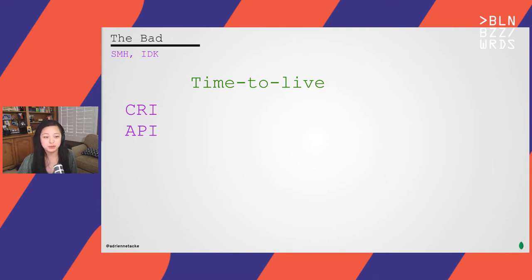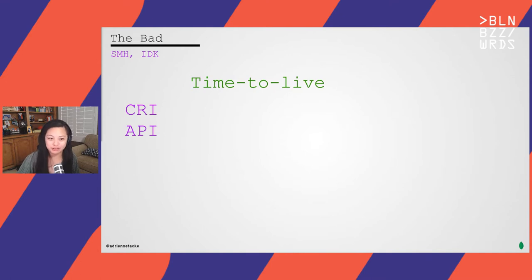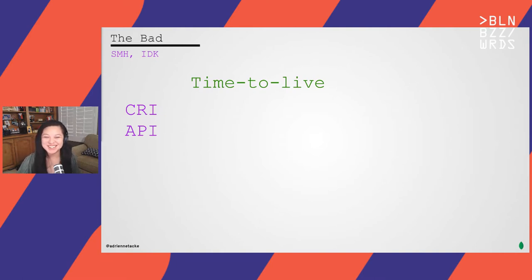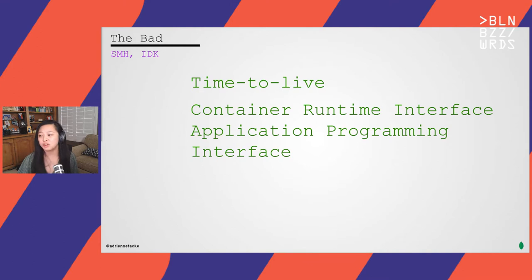CRI could mean color reversal internegative — a motion picture film duplicate — or 'croce rosa italiana,' the Italian Red Cross, or for someone coming from medicine, it might mean chronic renal insufficiency, a symptom of chronic kidney failure. In the context of a tech tutorial, it most likely means container runtime interface, specifically the container runtime interface related to Kubernetes.